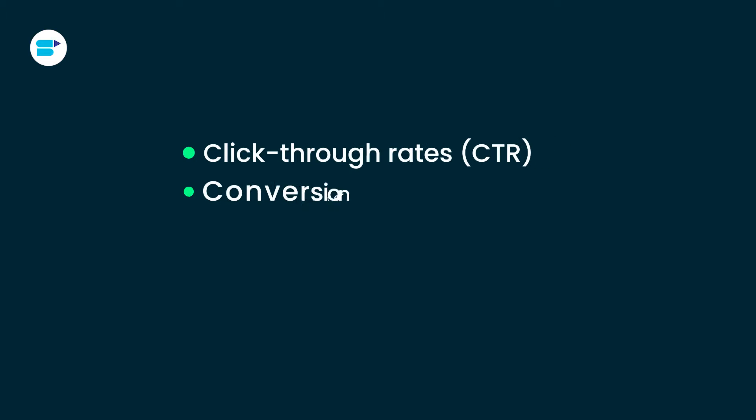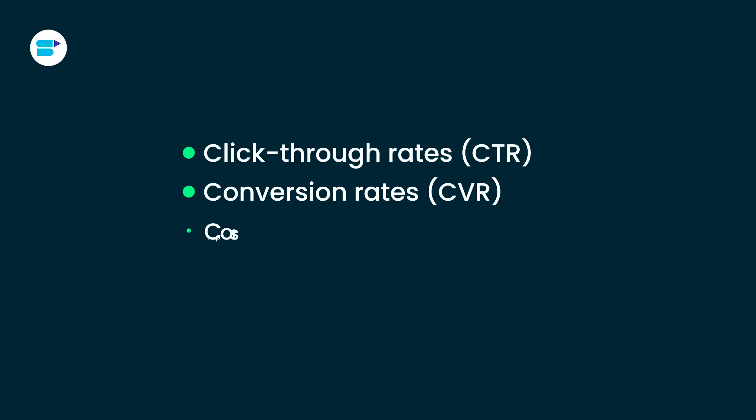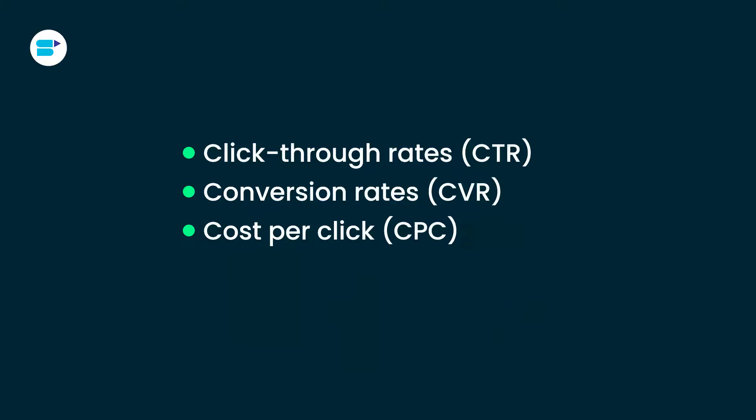Next, implement these variations gradually and keep an eye on how they affect your ad performance metrics like click-through rates, conversion rates, and cost per click. By conducting careful A/B testing, you'll be able to fine-tune your approach over time.